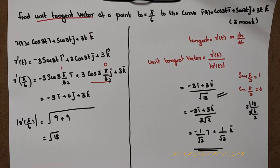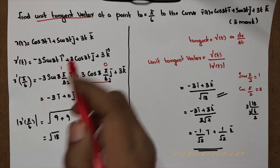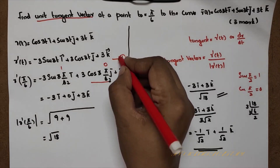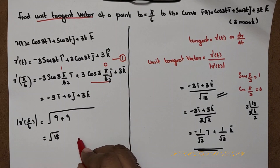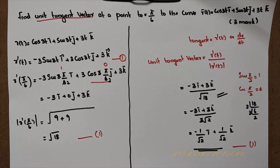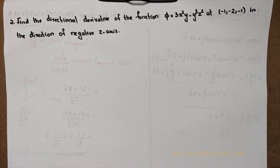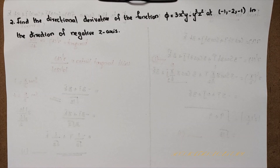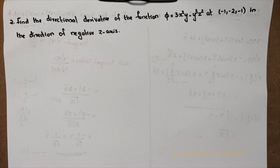The answer is complete. What is the mark distribution? Finding r'(t) is one mark, the modulus of r'(t) is another mark, and the final answer is the last mark — this is a 3-mark question. The next question: find the directional derivative of the function φ equal to 3x²y minus y³z² at the point (-1, -2, -1) in the direction of the negative z-axis. This is also a 3-mark question.